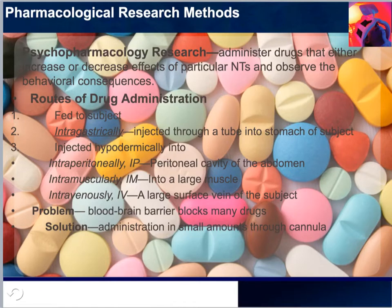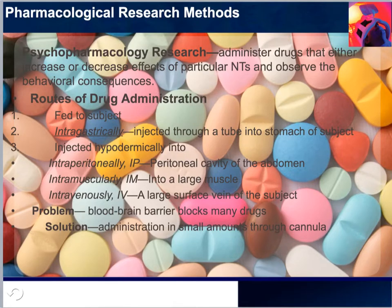The routes of drug administration are, for the most part, feeding it to the subject, providing it in an intragastric fashion, or injecting it in a hypodermic way. A problem with these peripheral routes of administration is that many drugs do not readily pass through the blood-brain barrier. To overcome this problem, drugs can be administered in small amounts through a fine or hollow tube called a cannula that has been stereotaxically implanted in the brain.